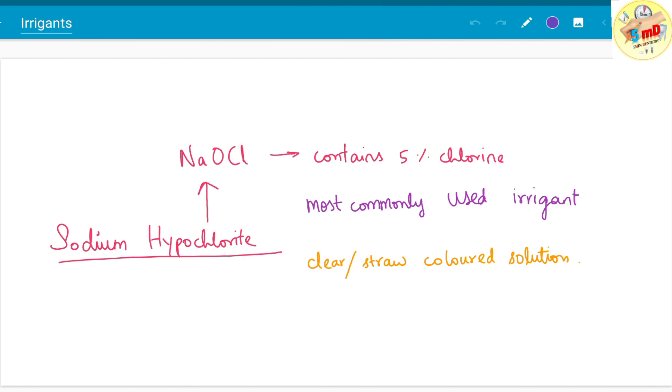Today let us see about irrigant solutions used in endodontics. Irrigation is a process commonly done concomitantly with root canal shaping. The most commonly used irrigating solutions are sodium hypochlorite and EDTA, along with chlorhexidine. Sometimes normal saline is also used.